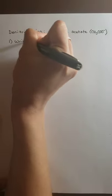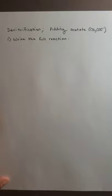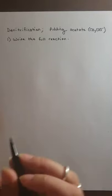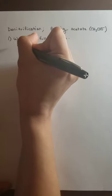We're going to do a denitrification example. Here we have a denitrification system and we're adding an external electron donor and carbon source — acetate. First, we need to write the full denitrification reaction. We could go to the table in our book, or we can do it the old-fashioned way and balance the half-reactions.